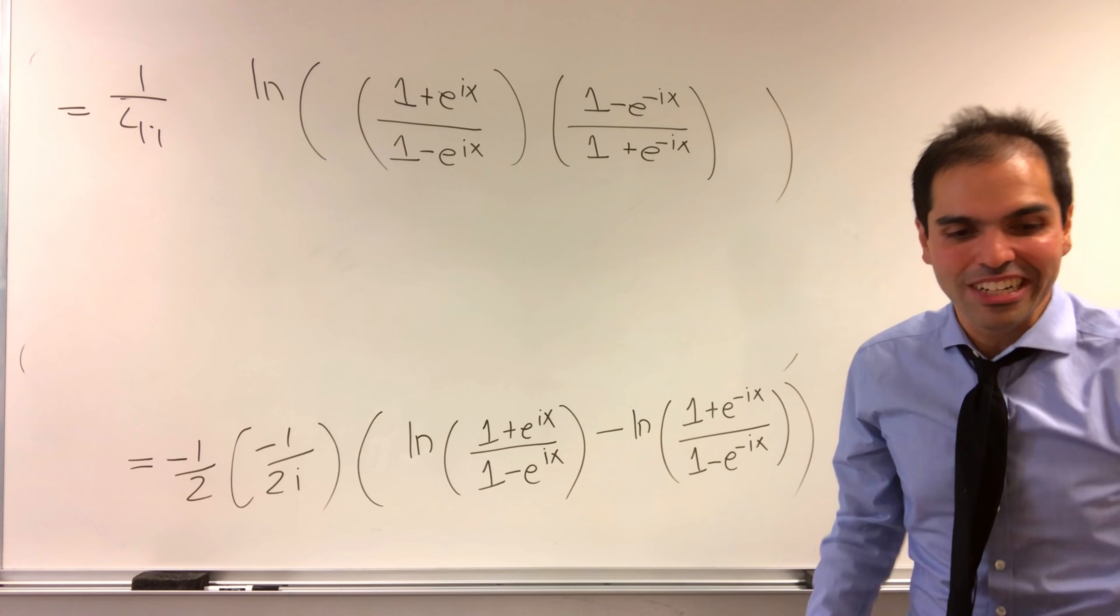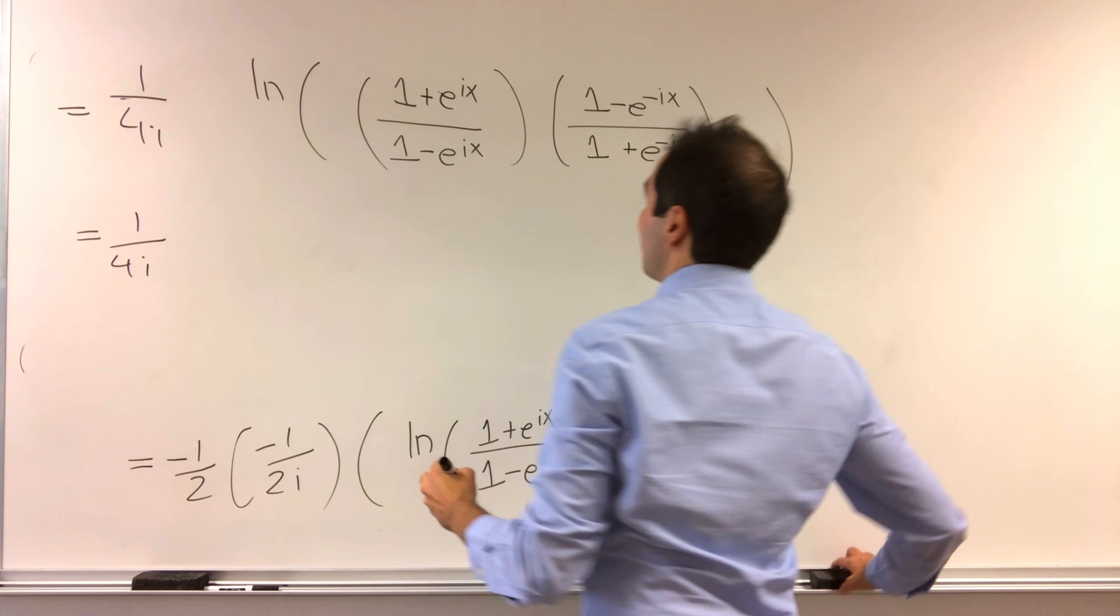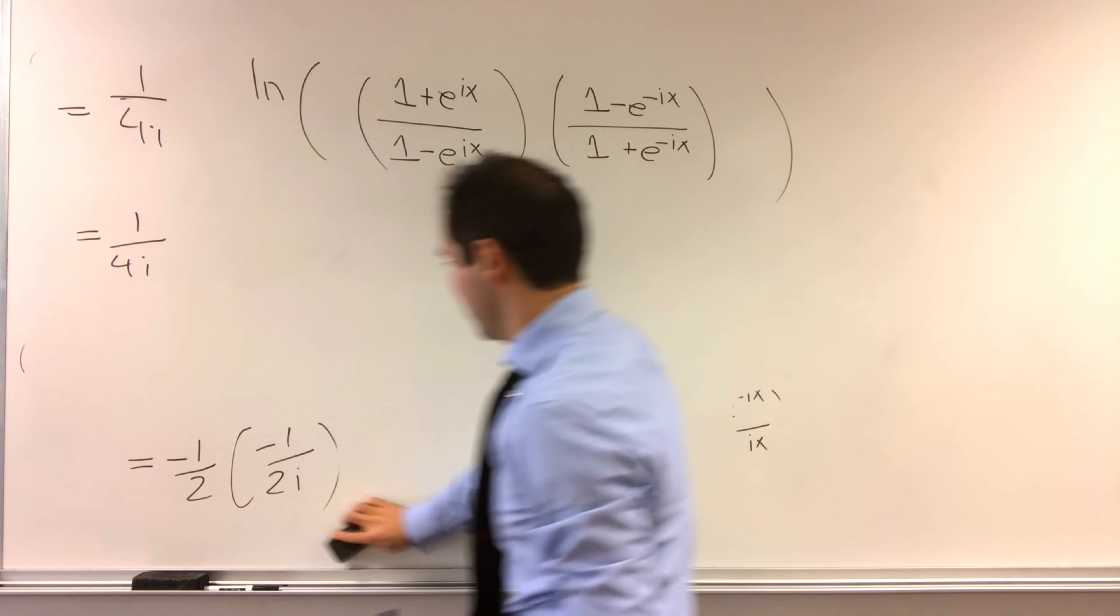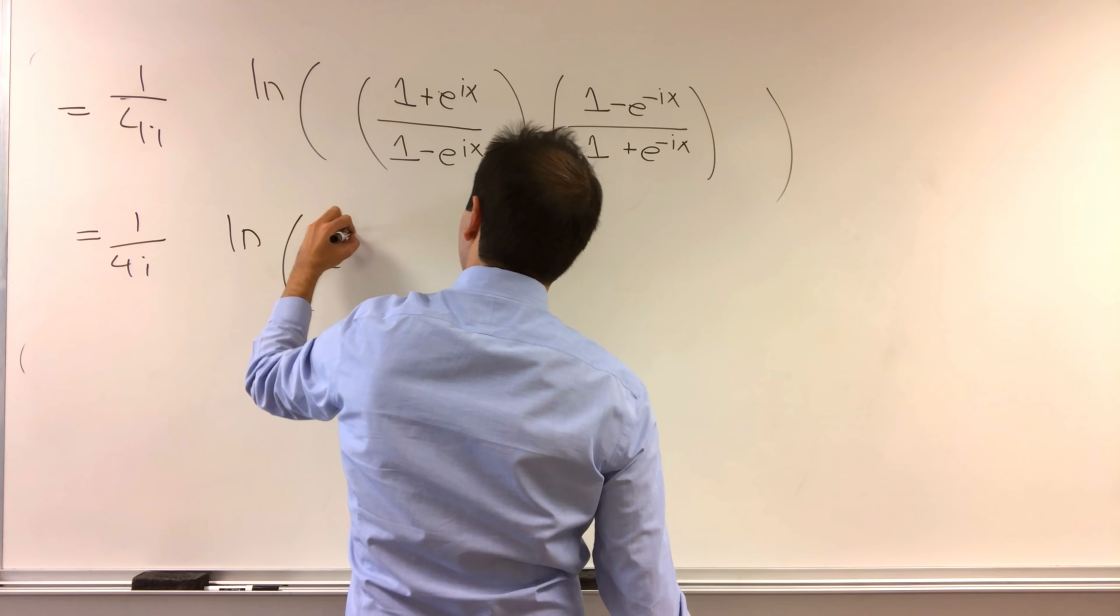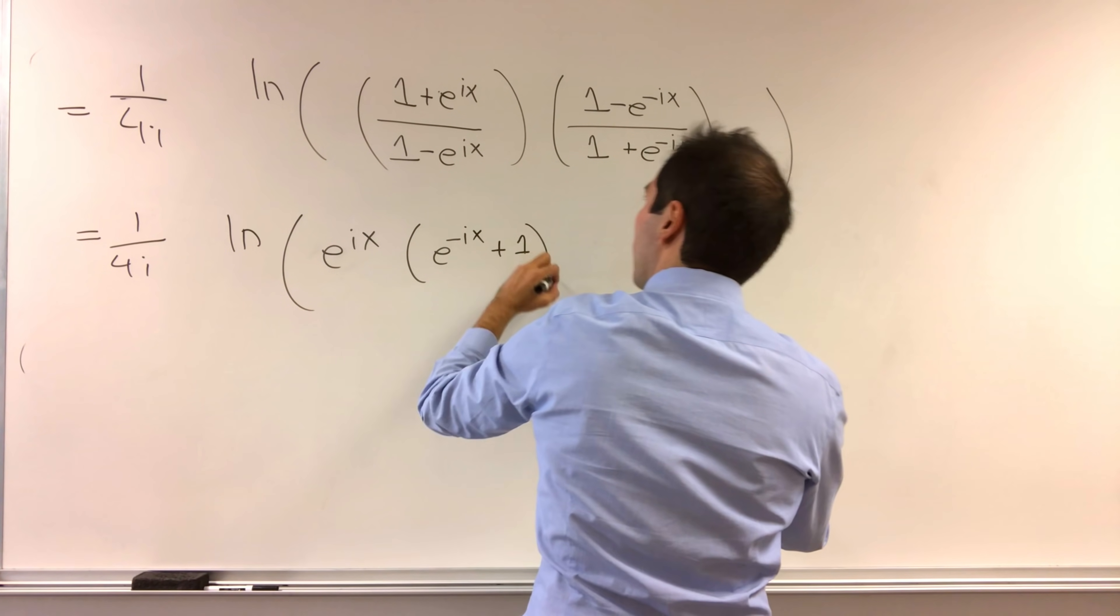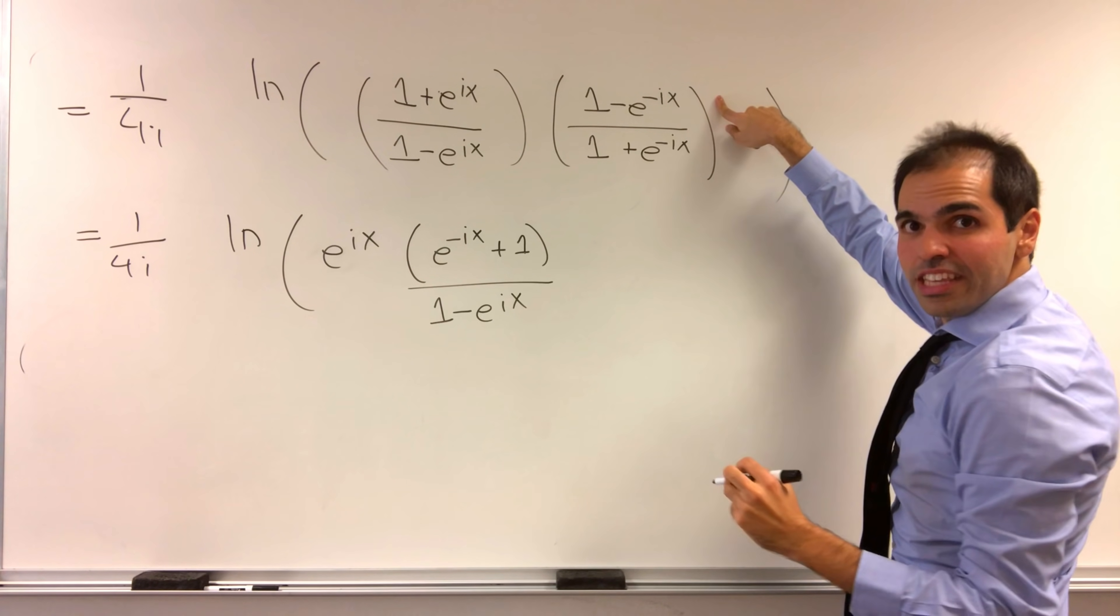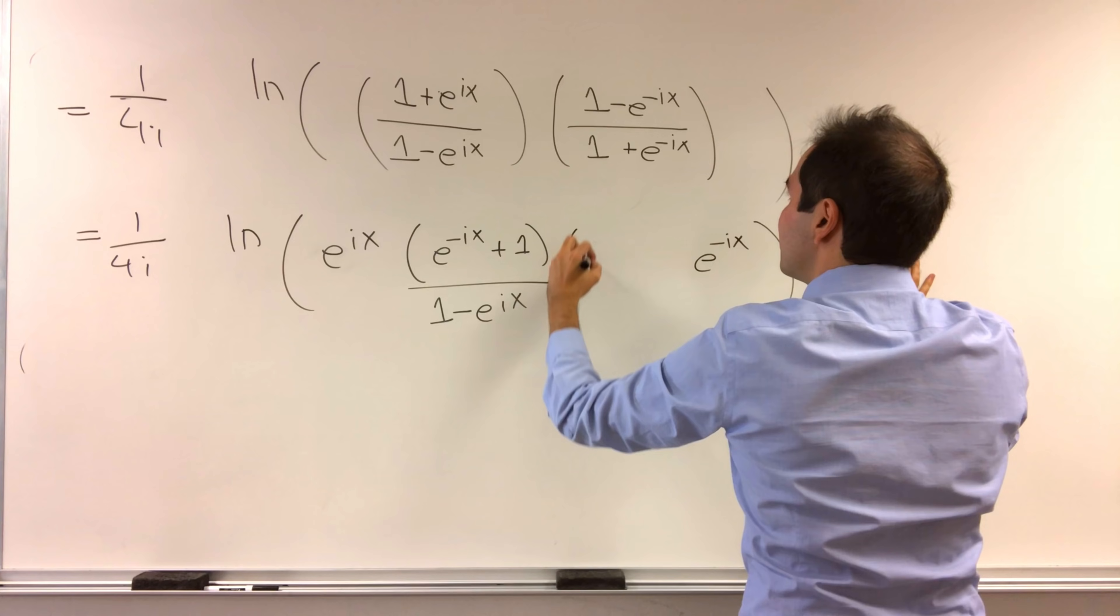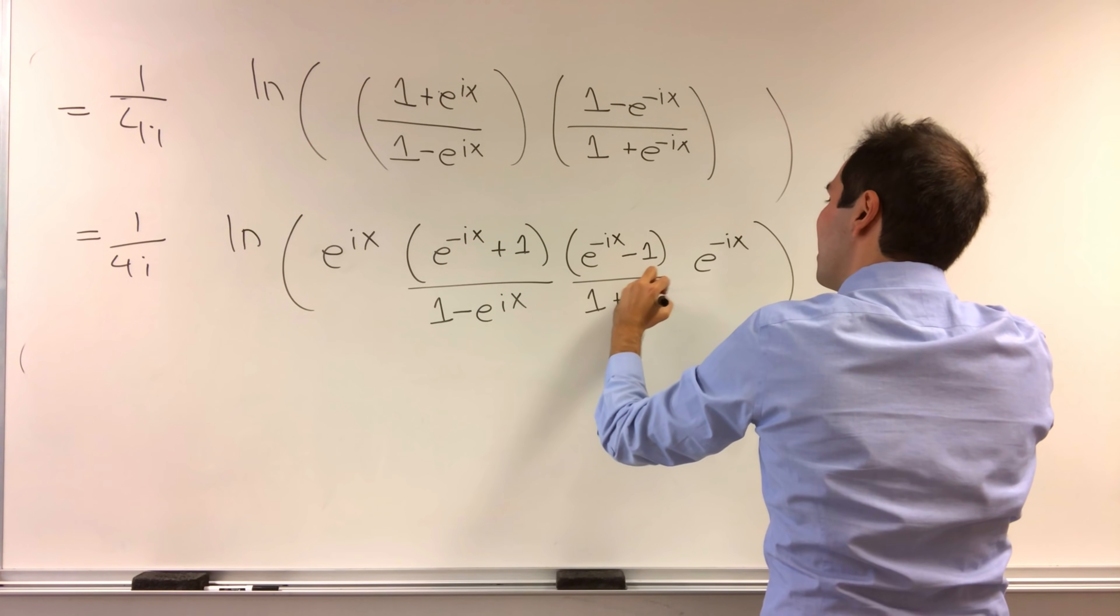And now you'll see the beauty of it. So just wait for it. Because we get 1 over 4i. How about we factor out an e to the ix from the left? So we get ln of e to the minus ix. All right. Then what we get is e to the minus ix plus 1 over 1 minus e to the ix. And how about from here we factor out an e to the minus ix. Then what we get is e to the minus ix minus 1 over 1 plus e to the minus ix.